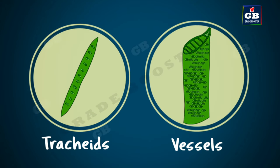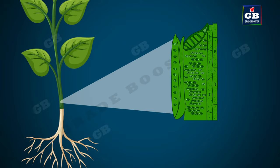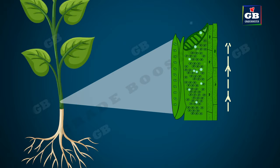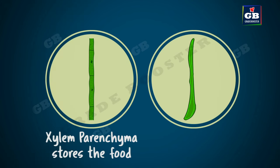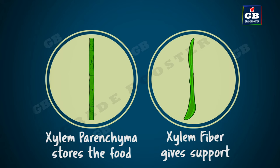Tracheids and vessels are tubular structures that have thick cell walls. When these cells mature, they become dead cells. Xylem tissue transports water and minerals from roots to different parts of the plant. Xylem parenchyma stores food, and xylem fibers give support to the plant.